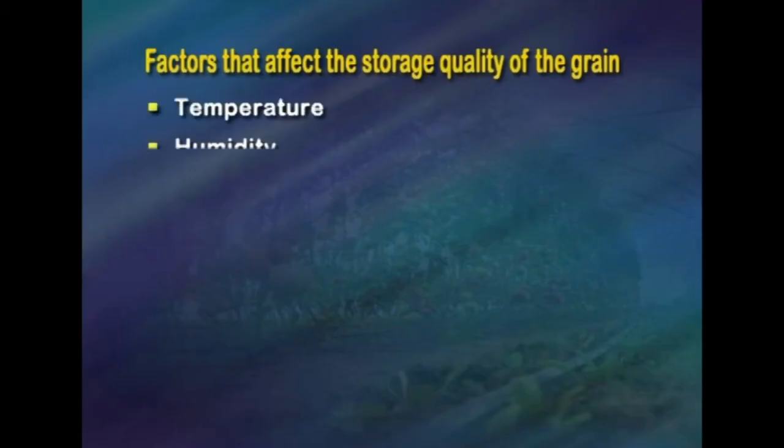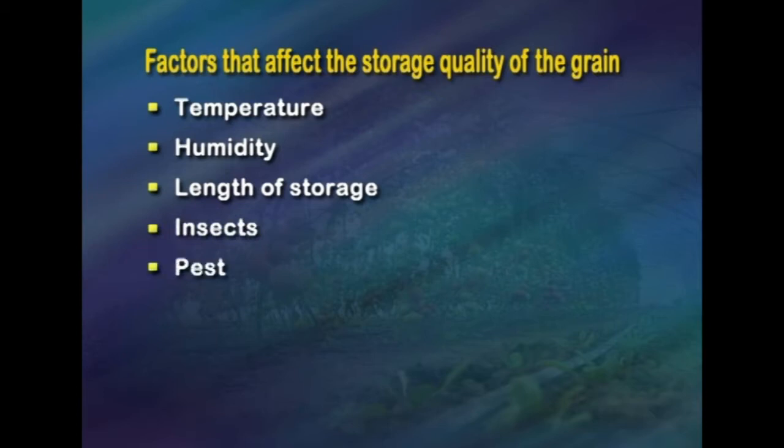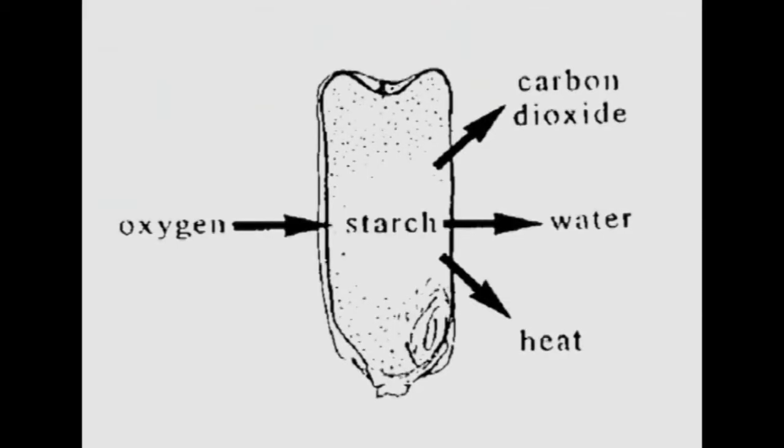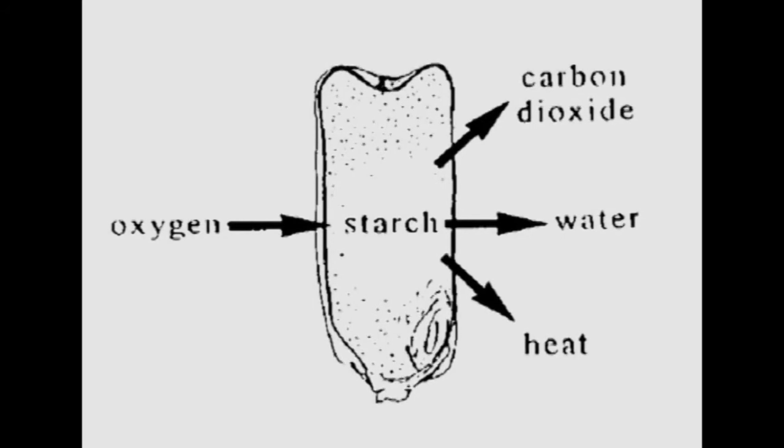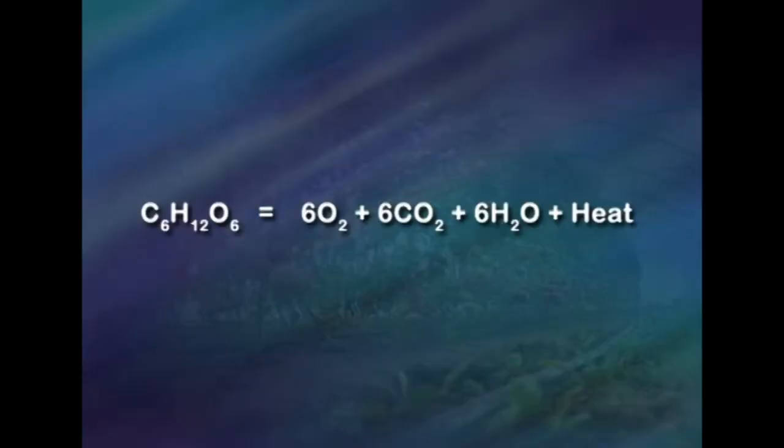Now we'll see the factors that affect the storage quality of the grain, which include temperature, humidity, length of storage, insects and pests, and respiration. In grain legumes, grains respire by taking in oxygen from the air and converting the nutrients stored in their cotyledons into heat, carbon dioxide and water in the form of moisture. These compounds are discharged into the atmosphere through respiration, as illustrated by the general equation: carbohydrates are converted to oxygen, carbon dioxide, water and heat. The process also induces the growth of moulds and insects.